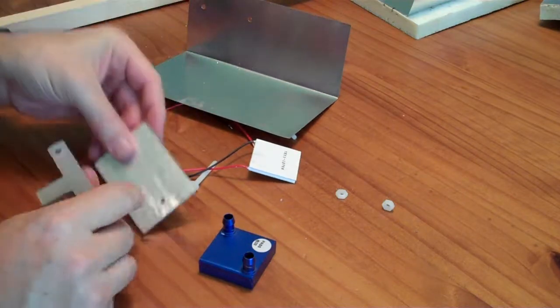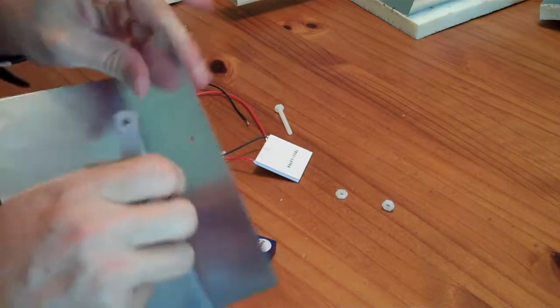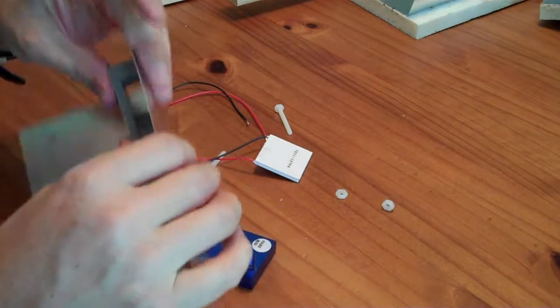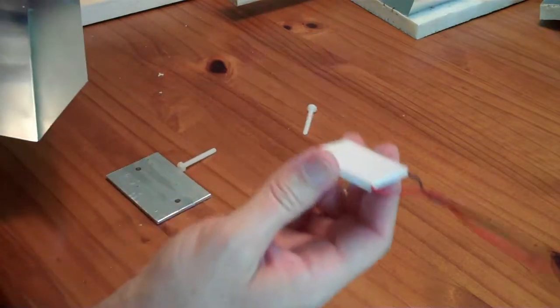The reason for the aluminum block here is that the flashing is pretty flexible, and so if you just bolt this thing on it's going to bend the flashing away from your thermal electric cooler.